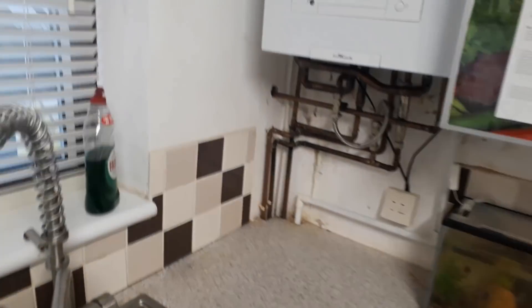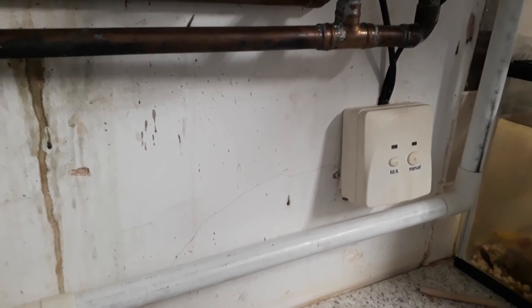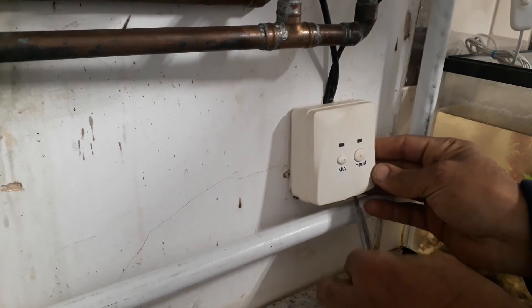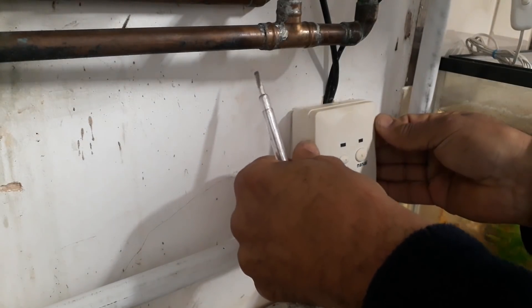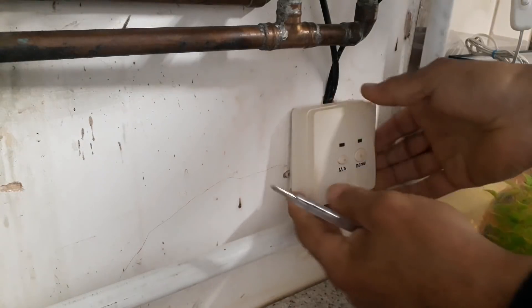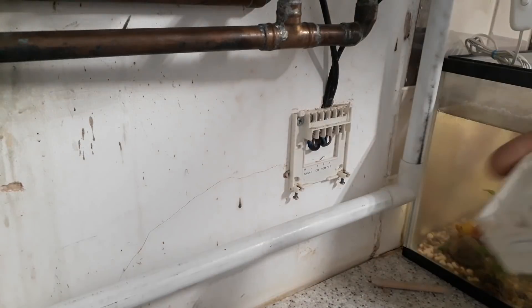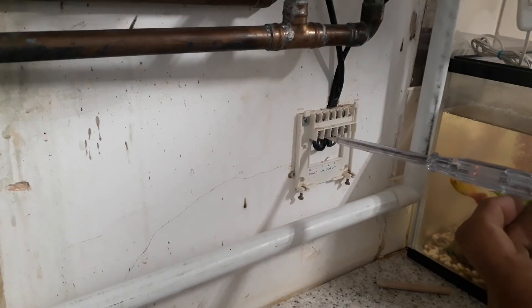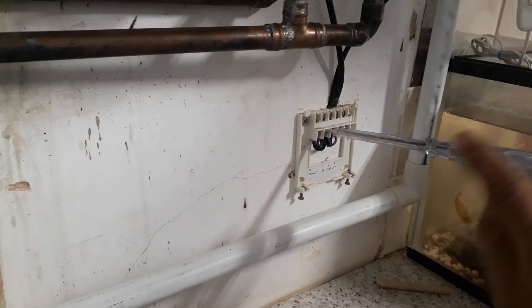I'm going to fit my Hive system to my Valiant boiler. First thing I'm going to do is take the old thermostat out. There's two screws at the bottom there. I didn't actually do them up because it was so low it was hard to do, so I just have to pull it up from the bottom.